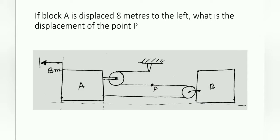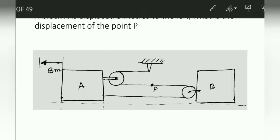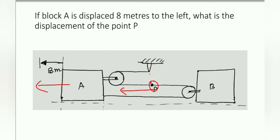Solve this question using basic methods — no special method, nothing like that. Suppose you have not attended any lecture: if block A is displaced, there are two blocks A and B with a combination of pulley and a fixed point. If block A is displaced 8 meters to the left, what is the displacement of point P on the middle string?